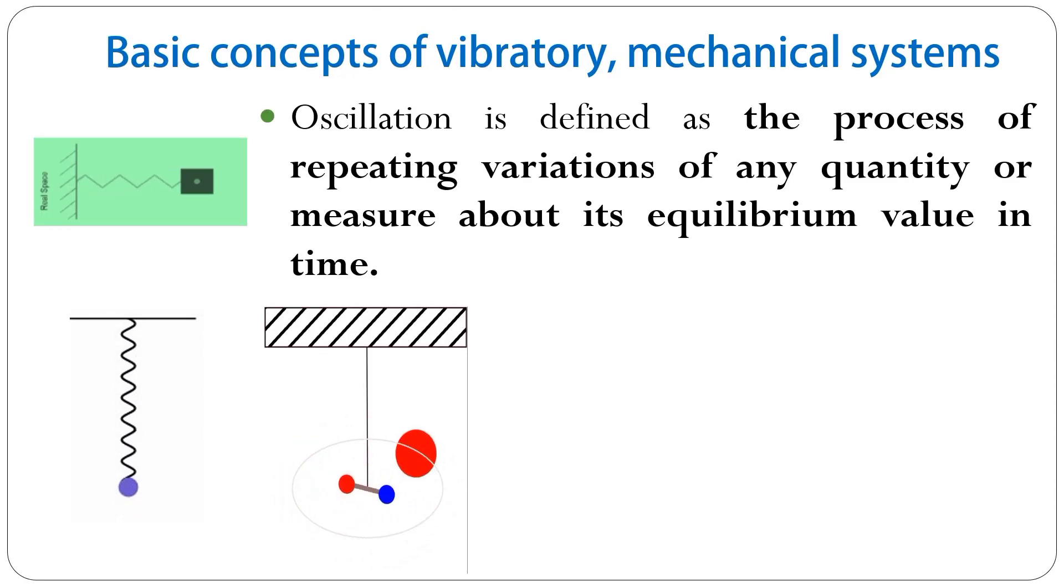Oscillation is defined as the process of repeating variations of any quantity or measure about its equilibrium value in time. Oscillation can also be defined as a periodic variation of a matter between two values or about its central value.